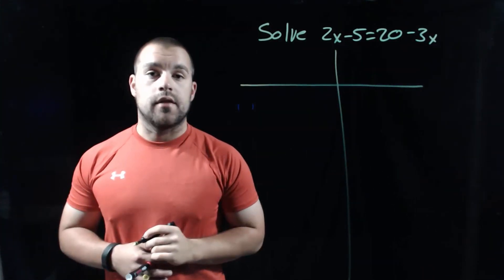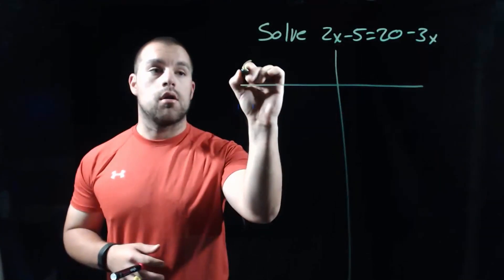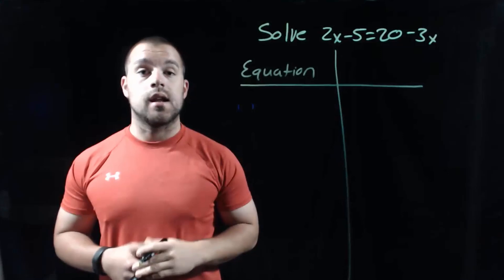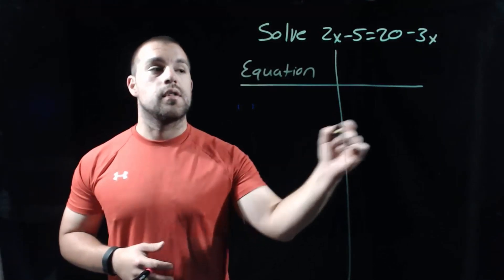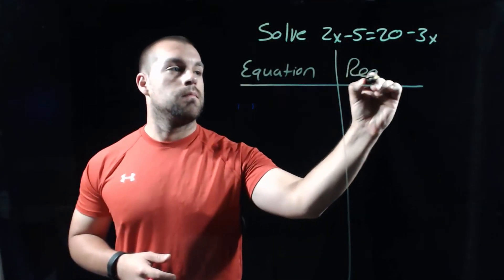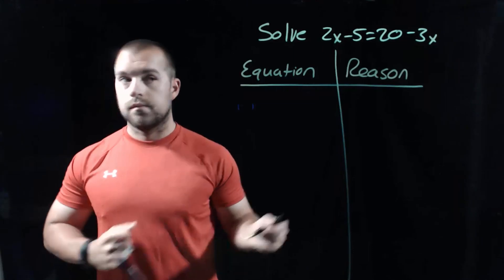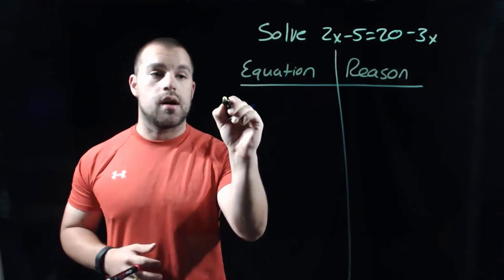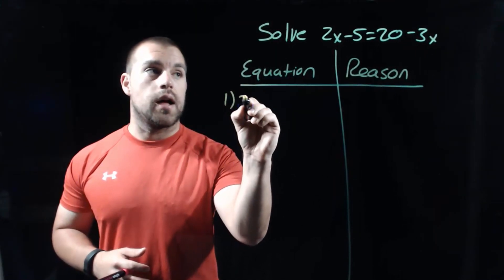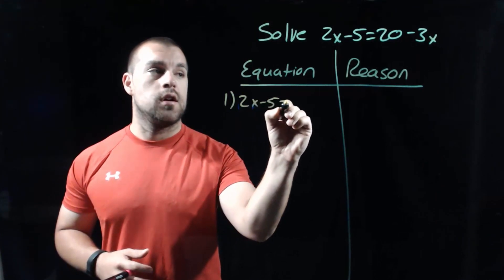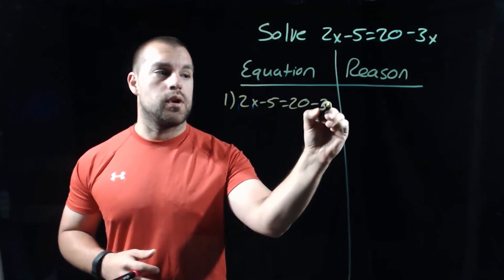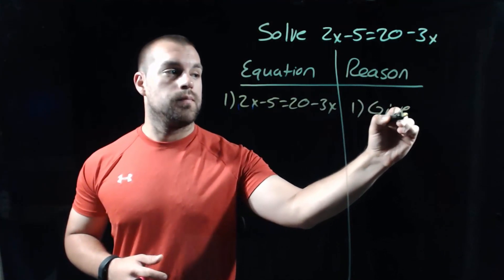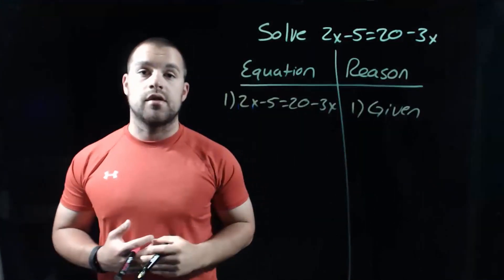On the left-hand side of our T-chart is where we're going to write out our equation, and on the right-hand side is where we're going to write out all of the reasons for the steps that we take. For the first step, we're just going to copy the equation down as it is: 2x minus 5 equals 20 minus 3x. And our reason there is "given" because that's the equation as it was given to us.